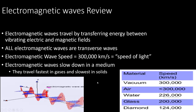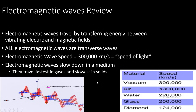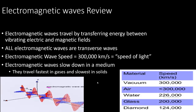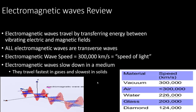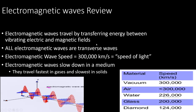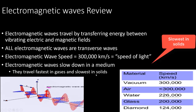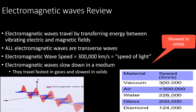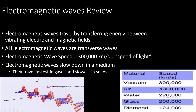Electromagnetic waves travel at the speed of light, which is 300,000 kilometers per second, and they slow down in a medium. They travel fastest in gases and slowest in solids. In the vacuum of space they travel at 300,000 kilometers per second, but through air they slow down, through water they slow down even more, through glass they slow down, and through diamond they only travel at 124,000 kilometers per second — because they travel slowest through solids.